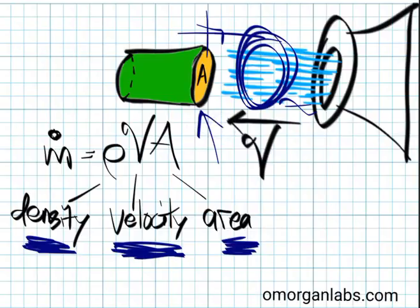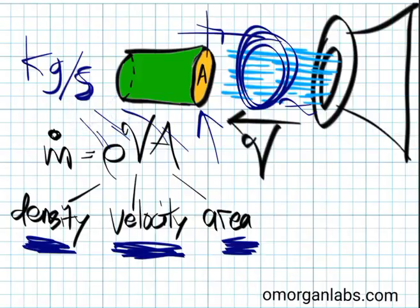Multiply all these together and you get kilograms per second. If this is kilograms per cubic meter, this is meters per second, and this is meters squared, everything cancels out, and you get kilograms per second.